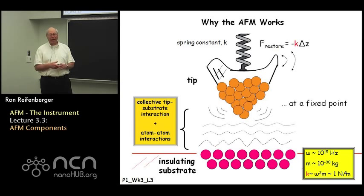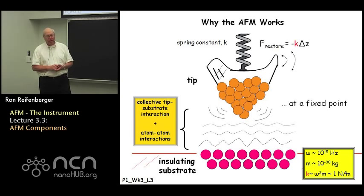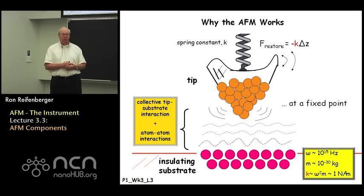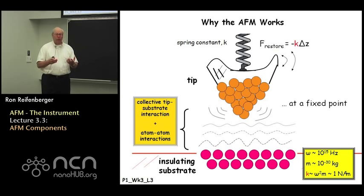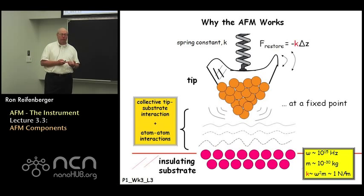The typical spring constants needed to achieve this goal can be worked out from a very simple back-of-the-envelope calculation. You know roughly the frequency at which atoms vibrate in a solid, and you know roughly the mass of an atom in a solid. If you take the ratio of the vibrating frequency to the mass, you find that the spring constant connecting atoms in the solid is on the order of a Newton per meter. So you're going to need a spring with a spring constant on the order of a Newton per meter — that's the general guideline giving you a sense of how stiff a spring you need.